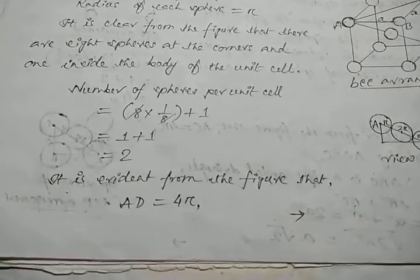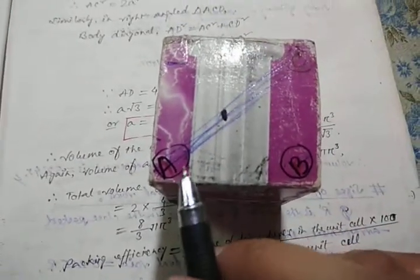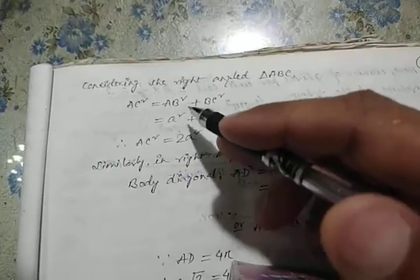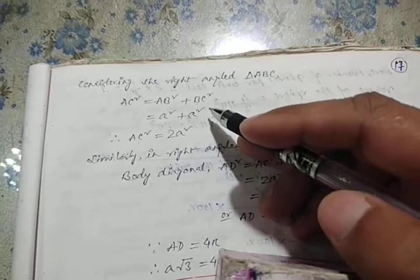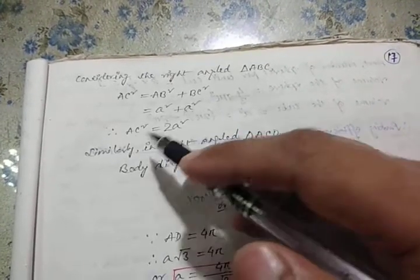Considering right angled triangle ABC, AC square is equal to AB square plus BC square. Since AB equals a and BC equals a, AC square equals 2a square.